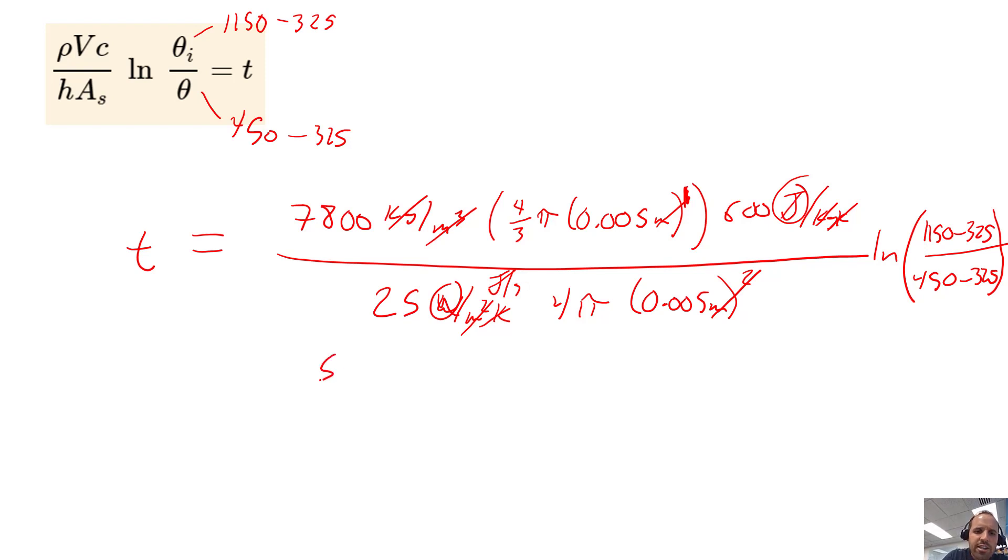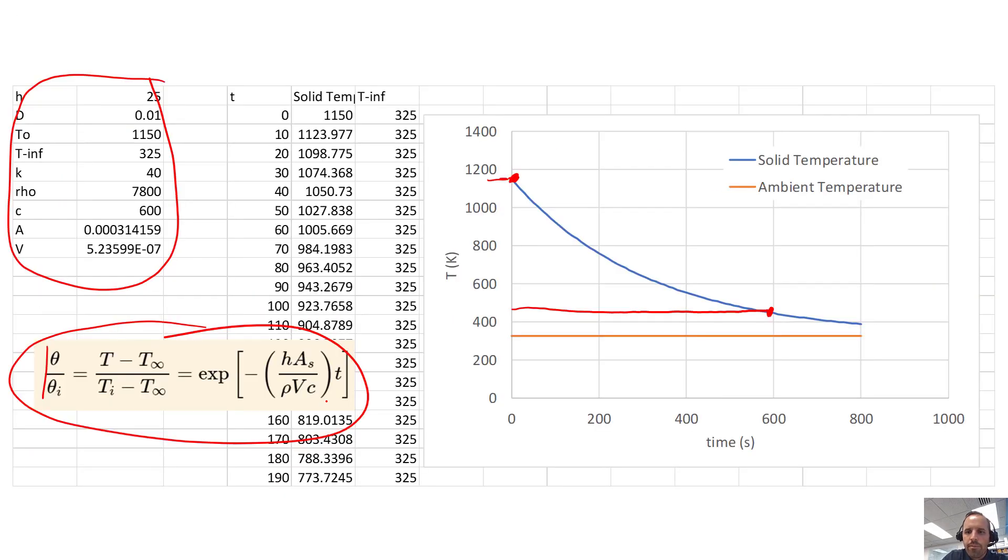I'm going to plug this into my calculator, and we end up getting that our time equals 589 seconds. Does that compare with what our graphical result showed? And yeah, it's actually right there. So it takes us about 589 seconds to cool from our initial temperature down to that predetermined temperature of 450. If we wanted to get even cooler down to 400, you can see that takes a bit longer. Because this profile is flattening out, because our convection driving force gets smaller and smaller as delta T gets reduced, there's a point of diminishing returns where it would take a long time to truly get to 325.